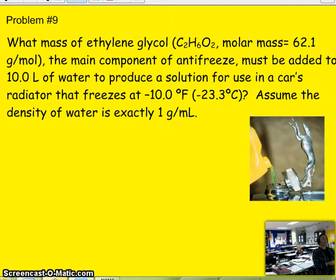What mass of ethylene glycol, the main component in antifreeze, must be added to 10 liters of water to produce a solution for use in a car's radiator that freezes at negative 10 degrees Fahrenheit or negative 23.3 degrees Celsius? Assume the density of water is exactly 1 gram per milliliter. Okay.